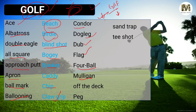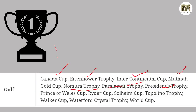Tee shot has been asked very many times. Golf cups and trophies: Canada Cup, Eisenhower Trophy, Intercontinental Cup, Mutiha Gold Cup, Nomura Trophy, Paralambi Trophy, President's Trophy, Prince of Wales — very very important — and Ryder Cup — also very important. These two have been asked many times, so please keep this in mind. Also: Solheim Trophy, Topolino Trophy, Walker Cup, Waterford Crystal Trophy, and World Cup.